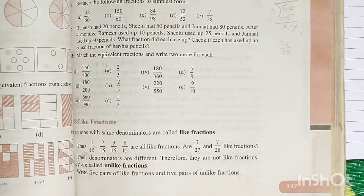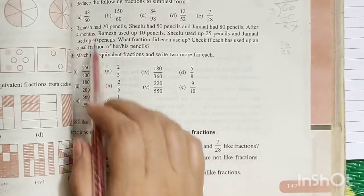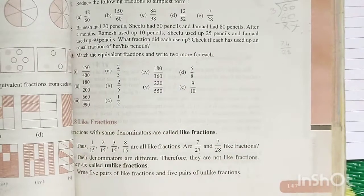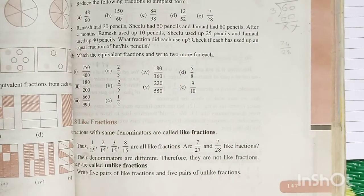Ramesh had 20 pencils, Shilu had 50 pencils, Jamal had 80 pencils. After 4 months, Ramesh used up 10 pencils, Shilu used up 25 pencils and Jamal used up 40 pencils. What fraction did each use up?